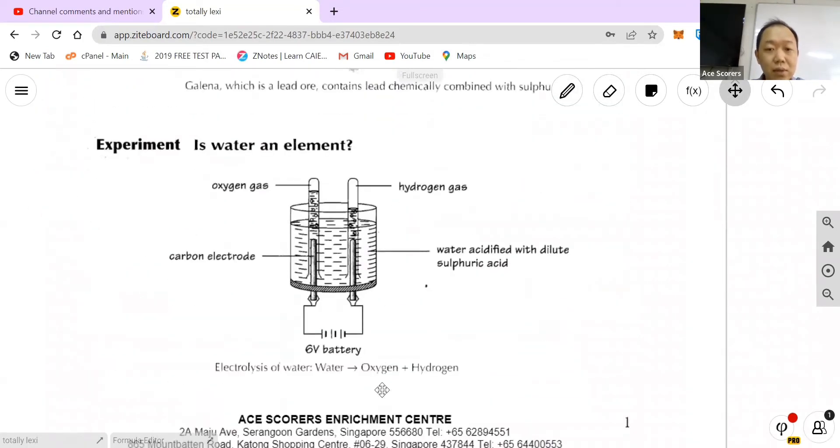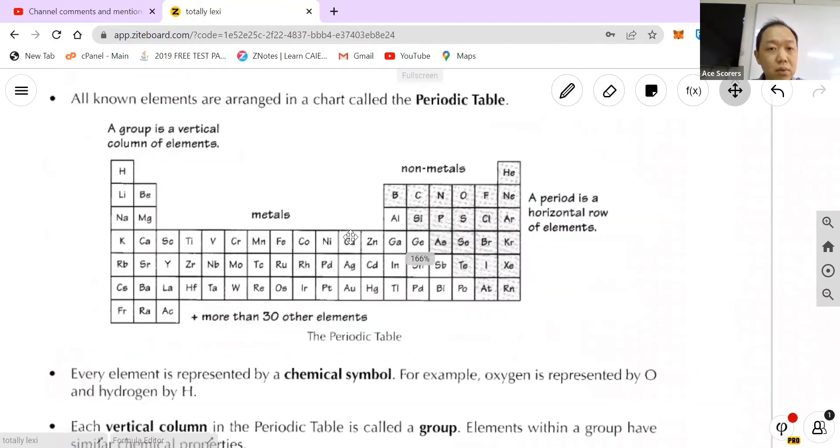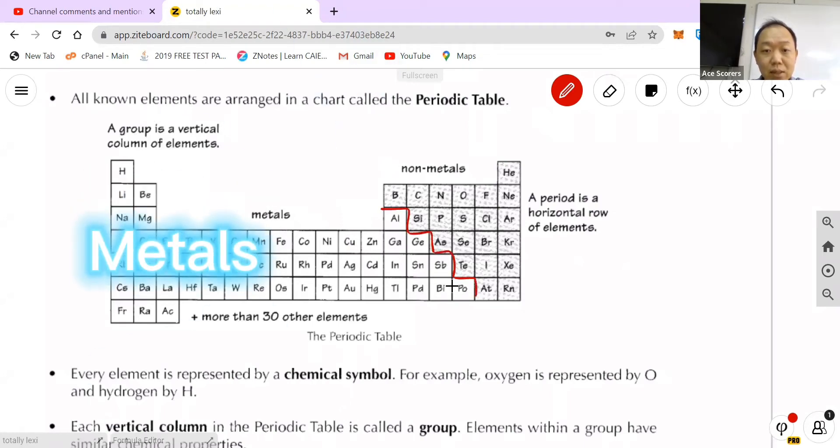You need to know that elements are arranged in what we call the periodic table. What is the meaning of a group? The group basically means vertical column of elements, and periods are horizontal. And you need to know that there's a line over here that separates the metals from the non-metals.